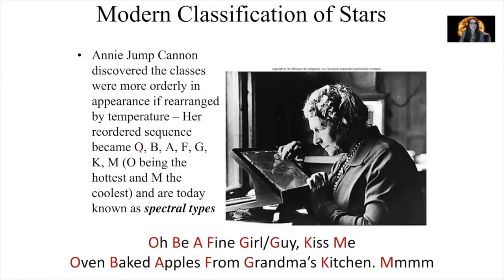Our hottest stars are spectral type O and our coolest stars are spectral type M. Our Sun is a spectral type G. In order to remember the pattern O, B, A, F, G, K, M, a lot of people will come up with a mnemonic, which helps them remember those letters. The one I learned when I took my first astronomy class was a phrase using each of those letters in order.